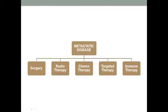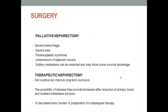For metastatic disease, options include surgery, radiotherapy, chemotherapy, targeted therapy, and immunotherapy. Palliative nephrectomy can be performed in patients with severe hemorrhage, pain, paraneoplastic syndrome, or adjacent viscera compression. Cytoreductive nephrectomy is performed when these symptoms are not present but metastasis exists, to increase disease-free survival. Metastasectomy — removing solitary metastases in the liver or lung — has also shown better results when combined with nephrectomy.